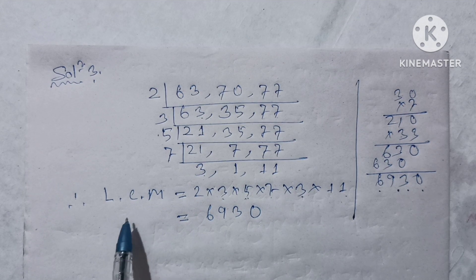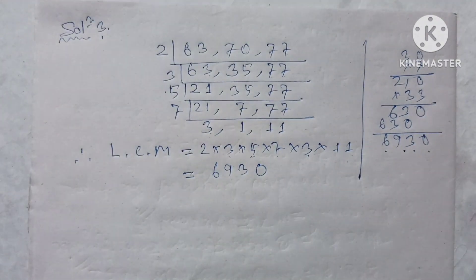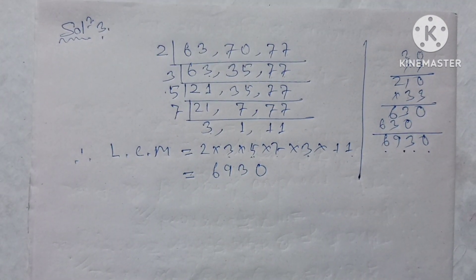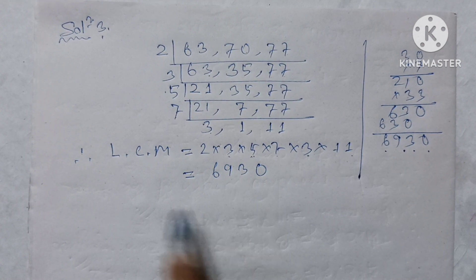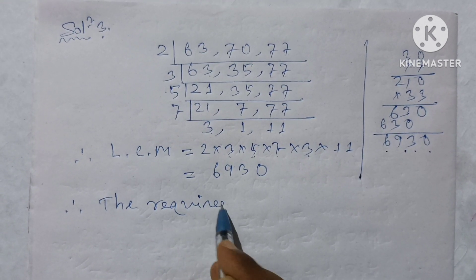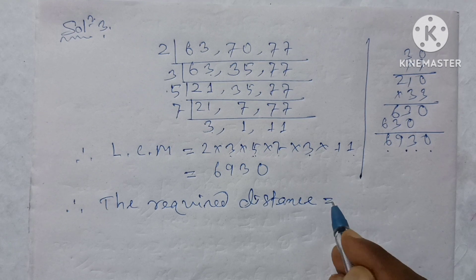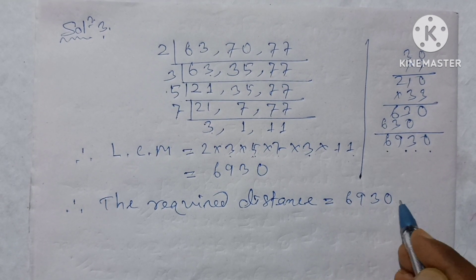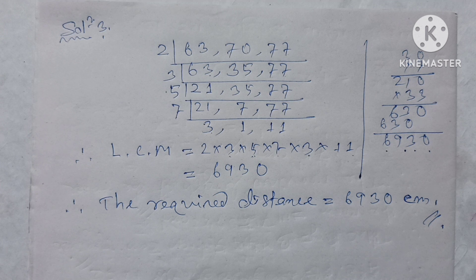The LCM gives the minimum distance. What is the minimum distance? It will be in centimeters. Therefore, the required distance equals 6930 centimeters. The minimum distance each should cover to meet at the same spot again is 6930 cm.